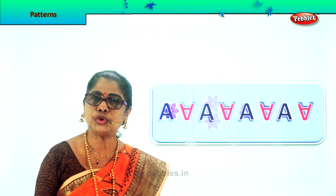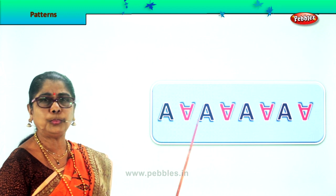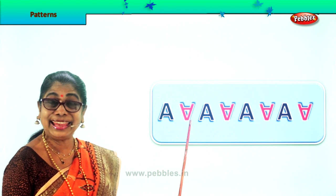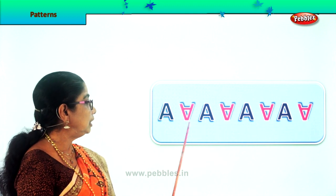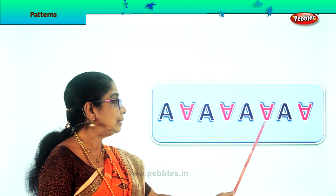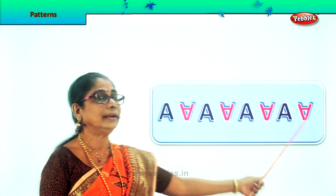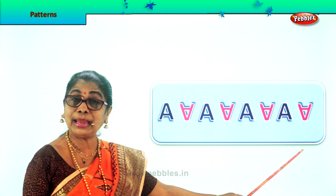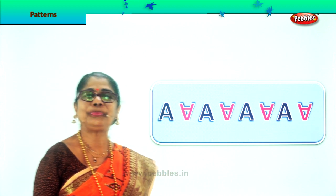Let's look at another. Look at this — Letter A. You write letter A and the other one you put upside down. So this is the pattern: one letter is properly put, the other letter A is put upside down. Are we going to repeat that? Again letter A and upside down. So this is followed once, twice, again three times, four times. Following this pattern again and again — this is called a pattern. You can make any number of patterns like this and enjoy doing it.